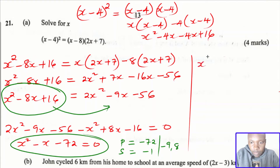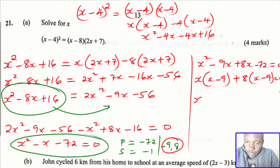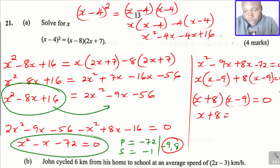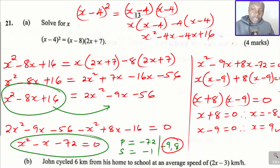To factorize, we split the middle term using negative 9 and 8: x squared minus 9x plus 8x minus 72 equals zero. Grouping gives x(x − 9) + 8(x − 9) = 0, so (x + 8)(x − 9) = 0. Therefore x + 8 = 0 gives x = −8, and x − 9 = 0 gives x = 9. The two solutions are x = −8 and x = 9.